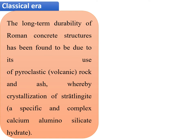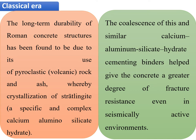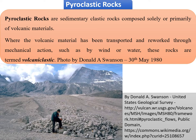During the classical era, the long-term durability of Roman concrete structures has been found to be due to its use of pyroclastic rock — that is, volcanic rock and ash — whereby crystallization of strätlingite, a specific and complex calcium-aluminosilicate hydrate, has been observed. The coalescence of this and similar calcium-aluminosilicate hydrate cementing binders gives the concrete a greater degree of fracture resistance, even in seismically active environments. Pyroclastic rocks are sedimentary clastic rocks composed solely or primarily of volcanic materials, also termed volcanic clastic rocks.